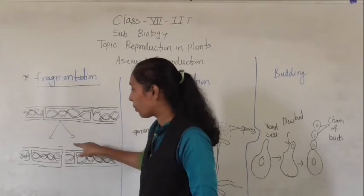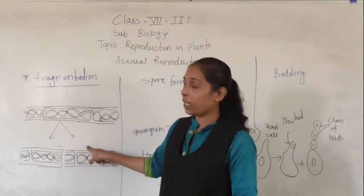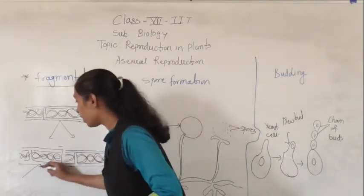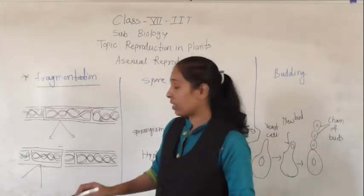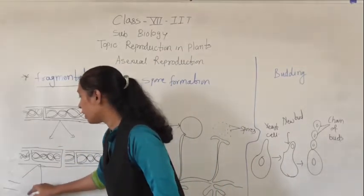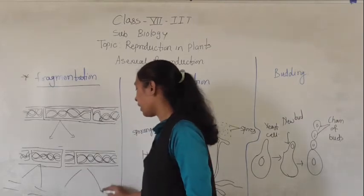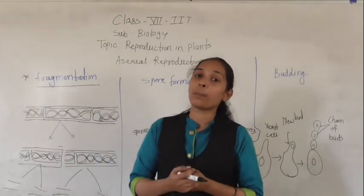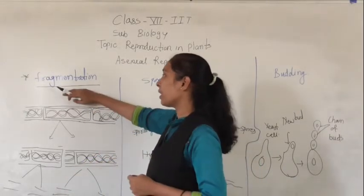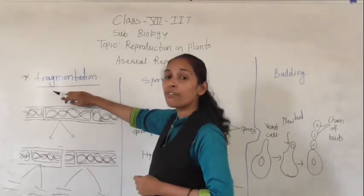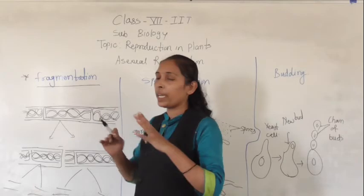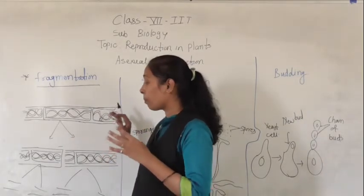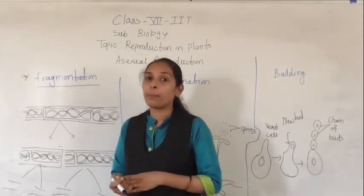From one algae we get two different algae, and each part starts to grow as a separate individual. Again this algae will get reproduced by fragmentation — it breaks down again and forms two more algae. Those two algae survive as separate individuals. So in this way the algae reproduces through fragmentation, where each broken part grows as a separate individual.